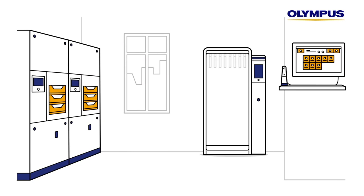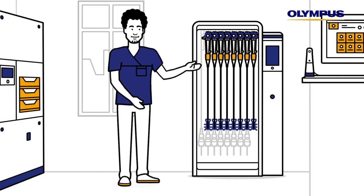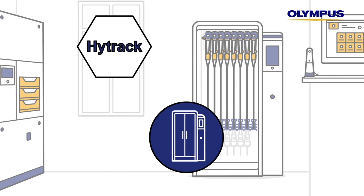After successful reprocessing, the specialist takes the endoscope out of the EWD in the clean area. For drying and storage, the endoscopes are hung up in a drying and storage cabinet. Endoscope and user data from the drying cabinet are automatically transmitted to HITRAC.